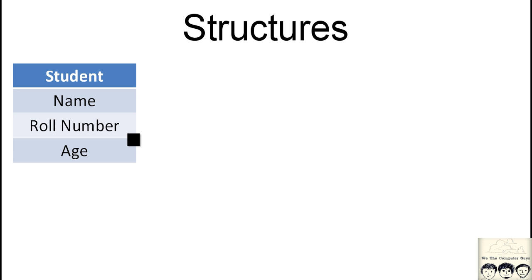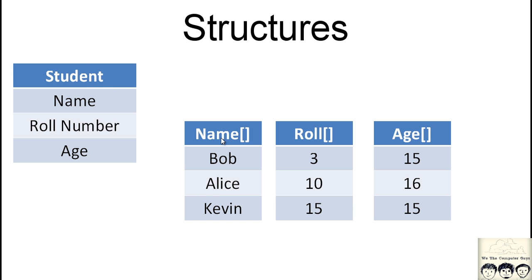The primitive approach you might think of right now is using arrays. We'll create three arrays — one will contain names, another will contain role numbers, and the last will contain ages. You fill these with the details of students, say Bob, Alice, and Kevin, with their respective role numbers and ages. But managing three arrays is very difficult to program, so to avoid this difficulty, structures came into picture.